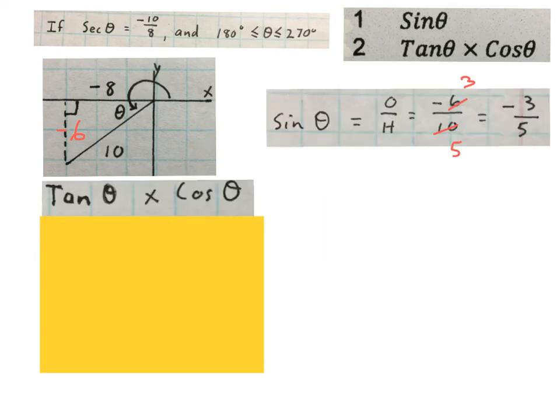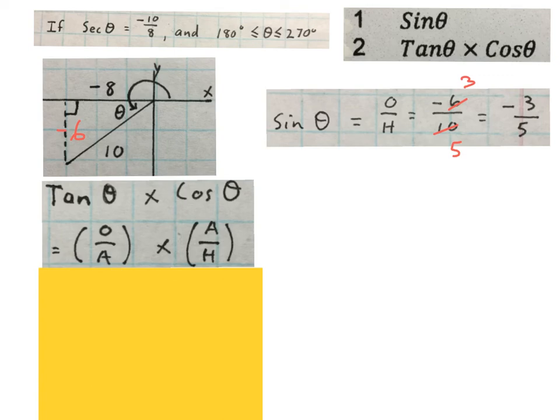Then I write down the second ratio they ask me to work out, tan theta times cos theta. From SOHCAHTOA, I write the following: O over A times A over H. I find the opposite is minus 6 and write it here. Take the adjacent minus 8, write it there. The adjacent minus 8, I write it there, and I write my hypotenuse, which is 10, down there. Then I simplify this on my calculator and write the final simplified answer.